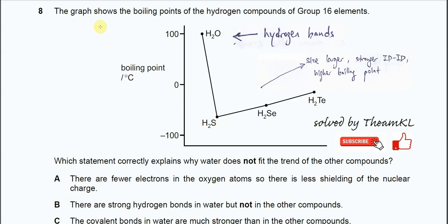Question 8. The graph shows the boiling point of hydrogen compounds of group 16 elements. Which statement correctly explains why water does not fit the trend of the other compounds?